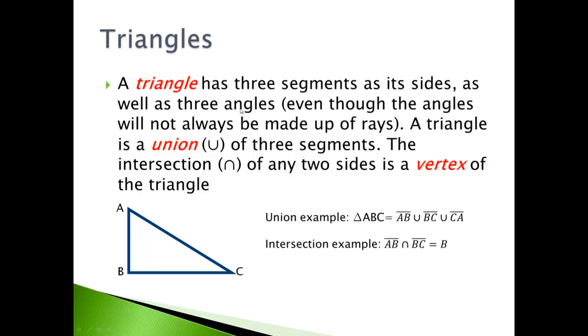And last but not least, triangles. A triangle has three segments as its sides as well as three angles. Even though the angles will not always be made up of rays. Because if you notice, these are capital letters which means that these are points here. There aren't any arrows extending. But when you're talking about a triangle, we can call these three different angles here, angles. Even though there's no rays as part of those angles. A triangle is made up of a union of three segments. Because notice here's a segment, AB. Here's another one, BC. And then we have AC as the third segment. The intersection of any two sides is a vertex of the triangle.